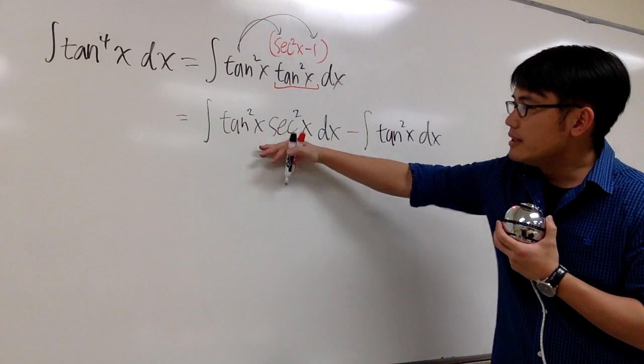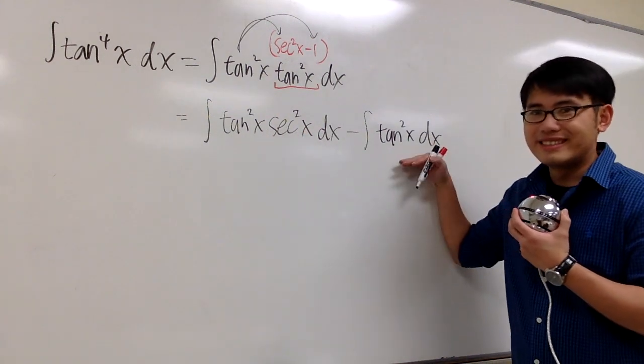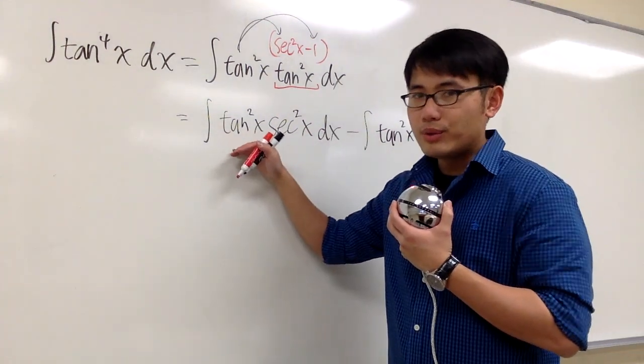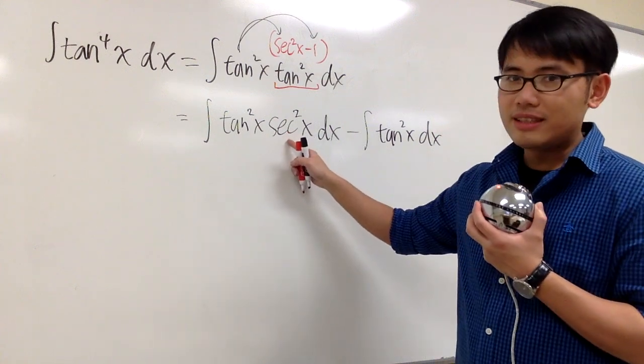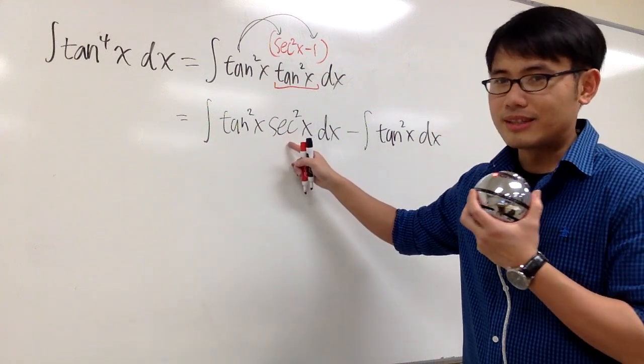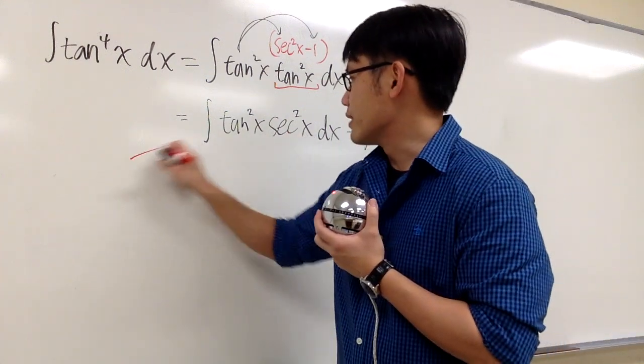And I claim this we can do it, and so is this. Well, to solve this, what we can do is, we are so lucky because we have the secant square to help us out. We can use the substitution right here. Let me just do it on the side.